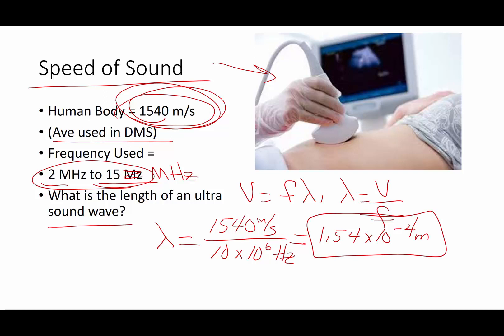So how big is that? Well, 10 to the negative 3 is a millimeter. So it's 0.154 millimeters. For a lot of people, across their pinky, their pinky finger is about 1 centimeter. So that means there are 10 millimeters across your pinky finger. And if you take 1 of those millimeters and divide that into 10 parts, one of those is about the size of an ultrasound wave. So you can get an awful lot of detail using these ultrasound waves. And that's why we use them.